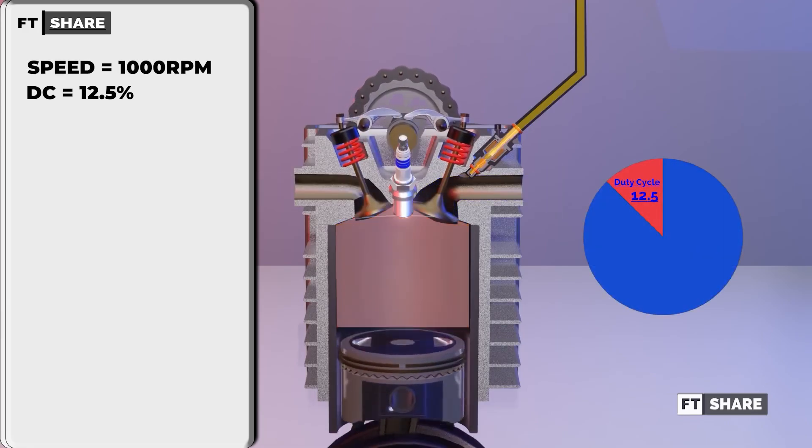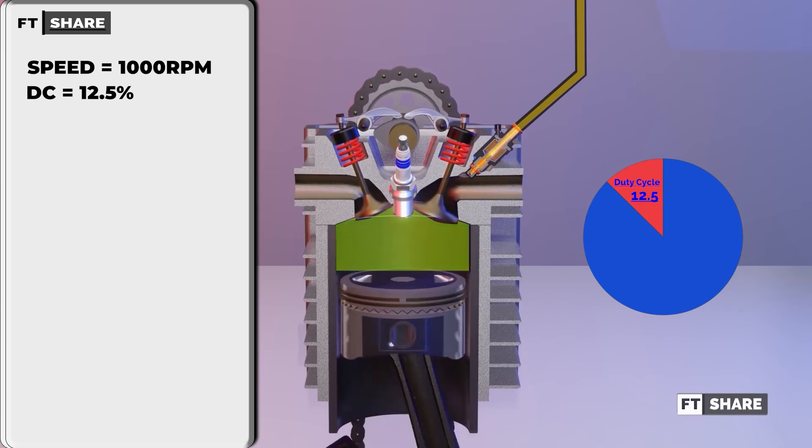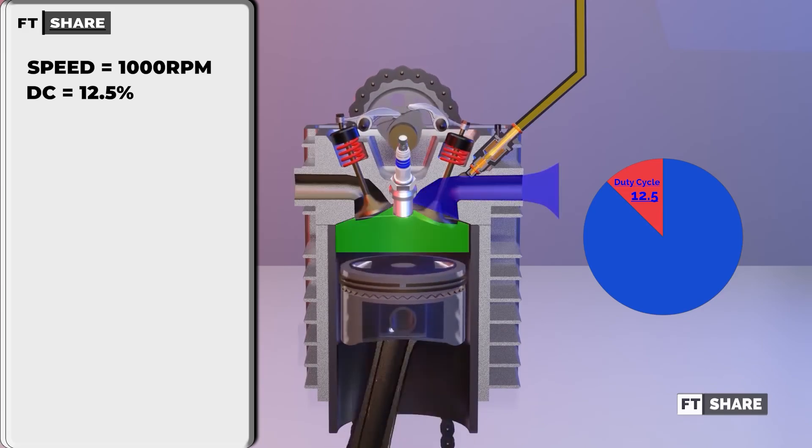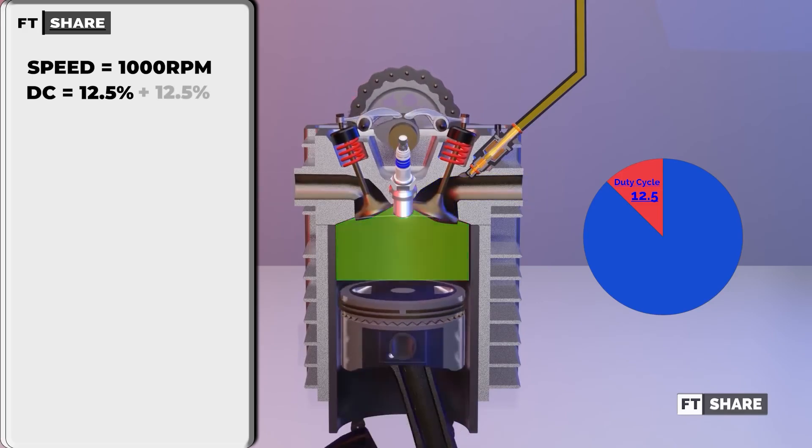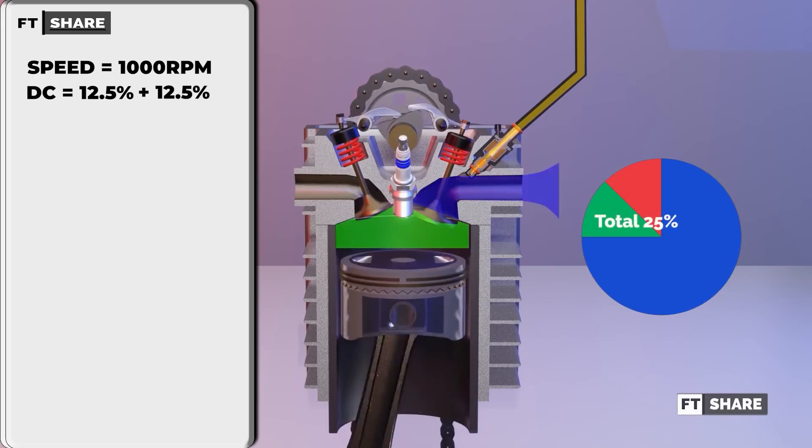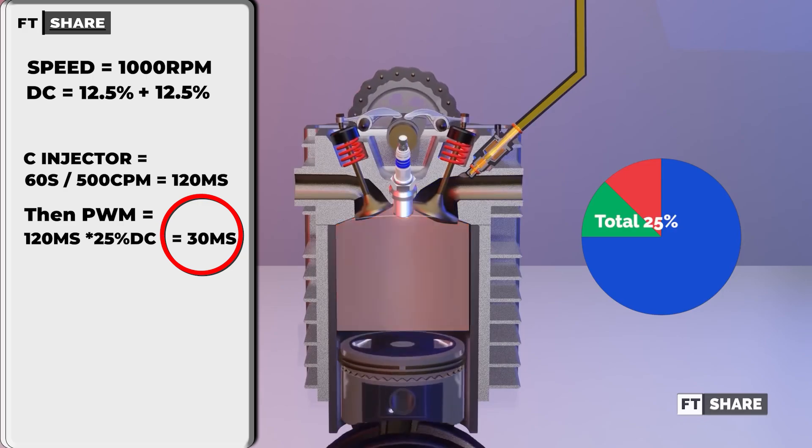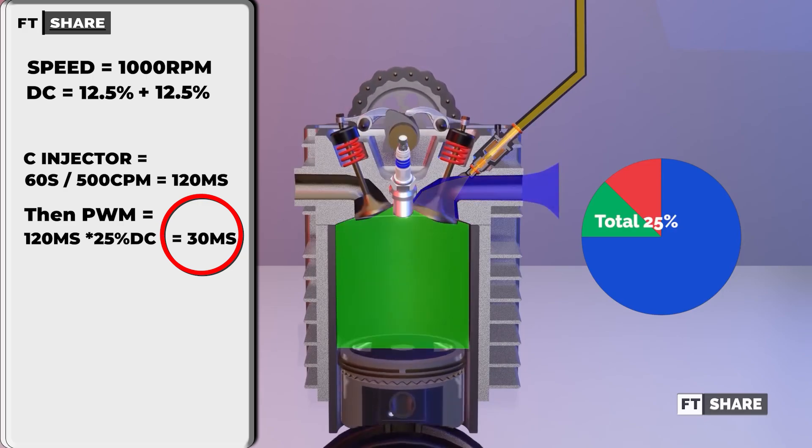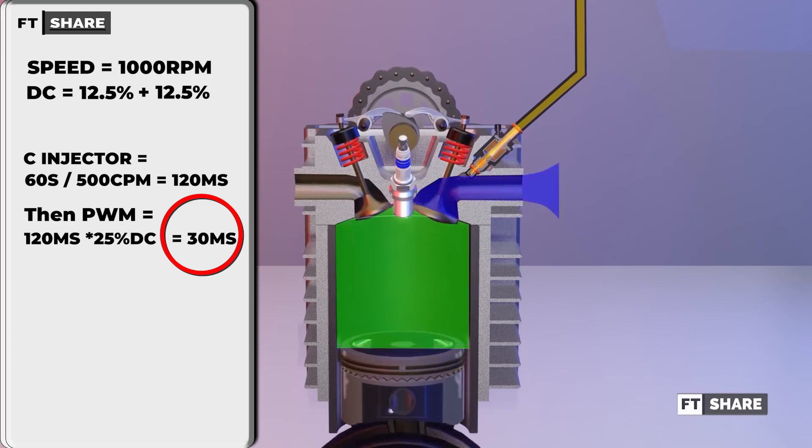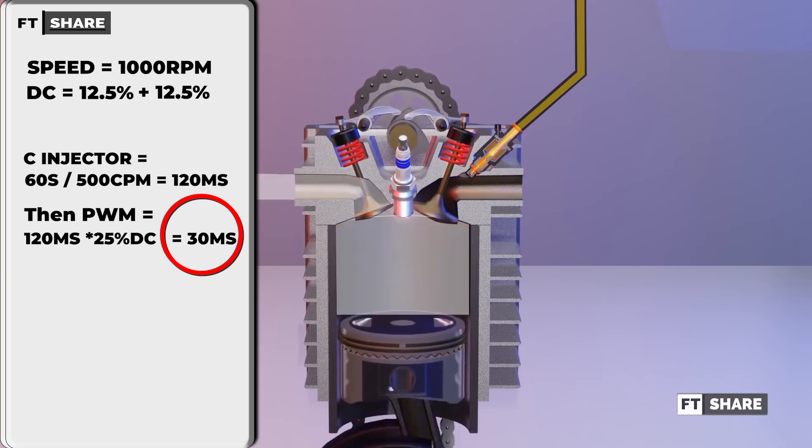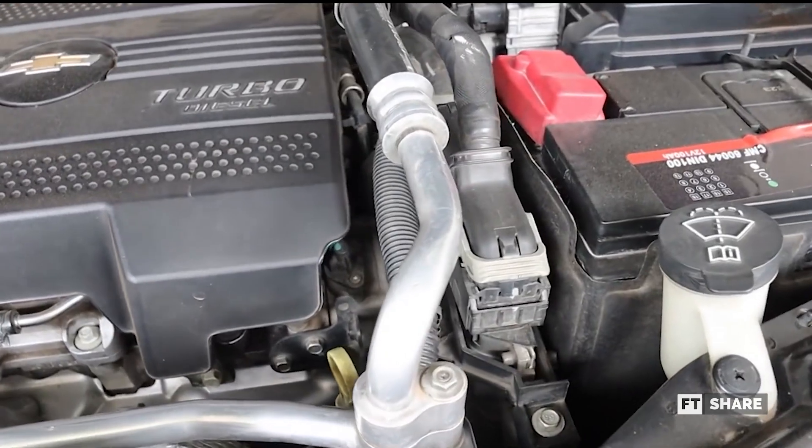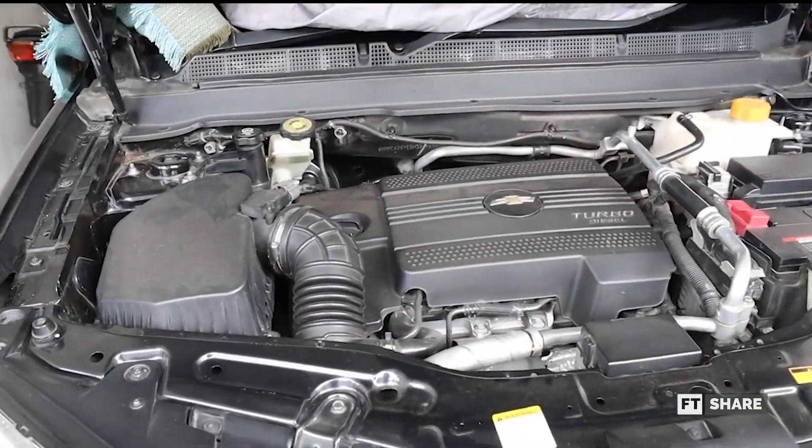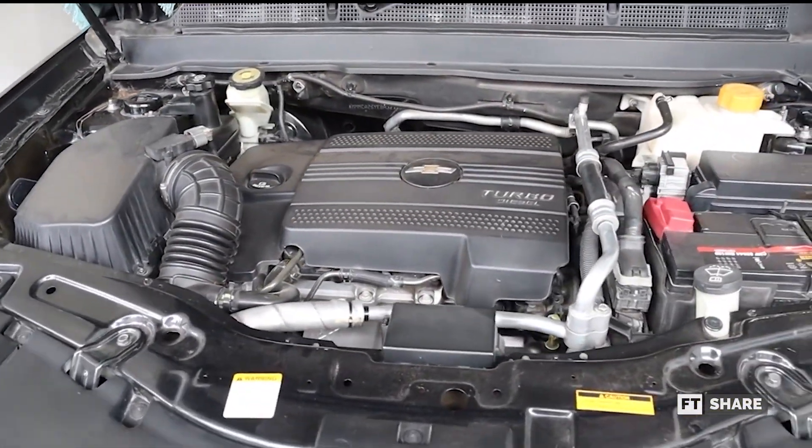At 1,000 revolutions per minute in cold engine conditions due to being newly started, the ECU will provide additional fuel by extending the duty cycle by 12.5%. This results in a PWM of 30 milliseconds, which means there will be more fuel supplied to the combustion chamber to increase the explosion until the engine reaches the ideal temperature. The same goes for other sensors. Their goal is to maintain engine performance in highly variable conditions and terrains.